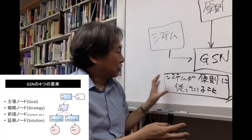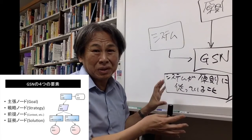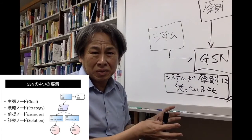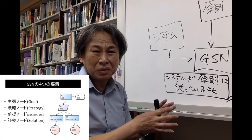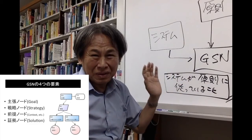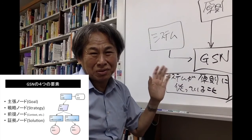To sum up, GSN uses these four basic components to explain the argument structure of the claim.